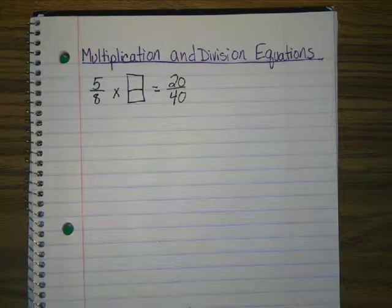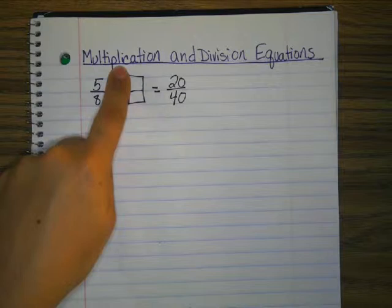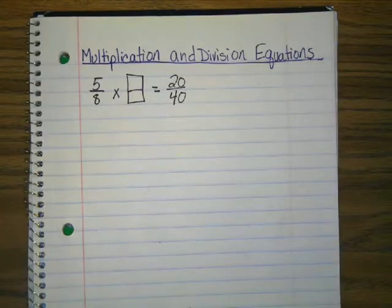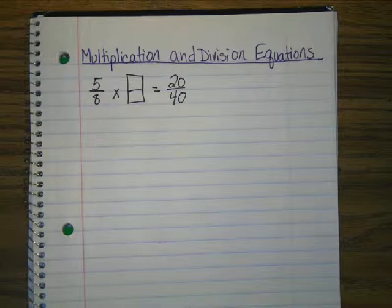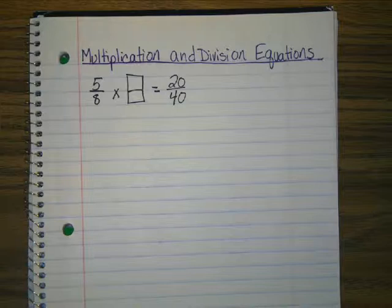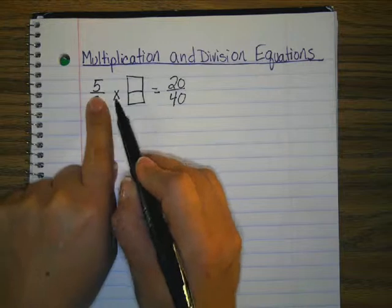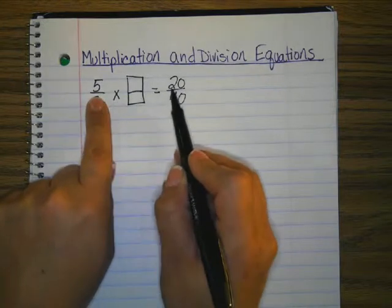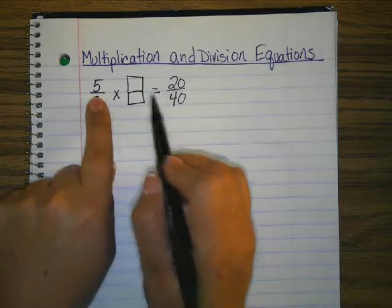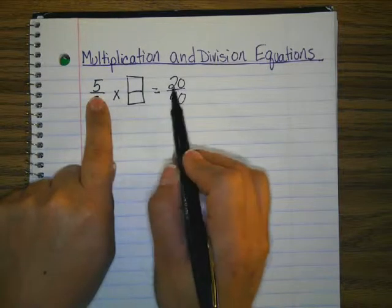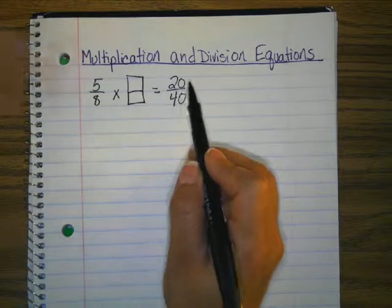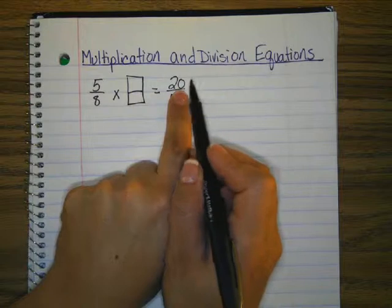Division. Good. So we're going to be using division to help us problem-solve. Basically, what this is saying is 5 times what number equals 20? Because when we multiply straight across, that's how we solve multiplication problems, right? So in your head, you're really thinking 20 divided by 5 is 4. So I can check that and say 5 times 4 is 20.